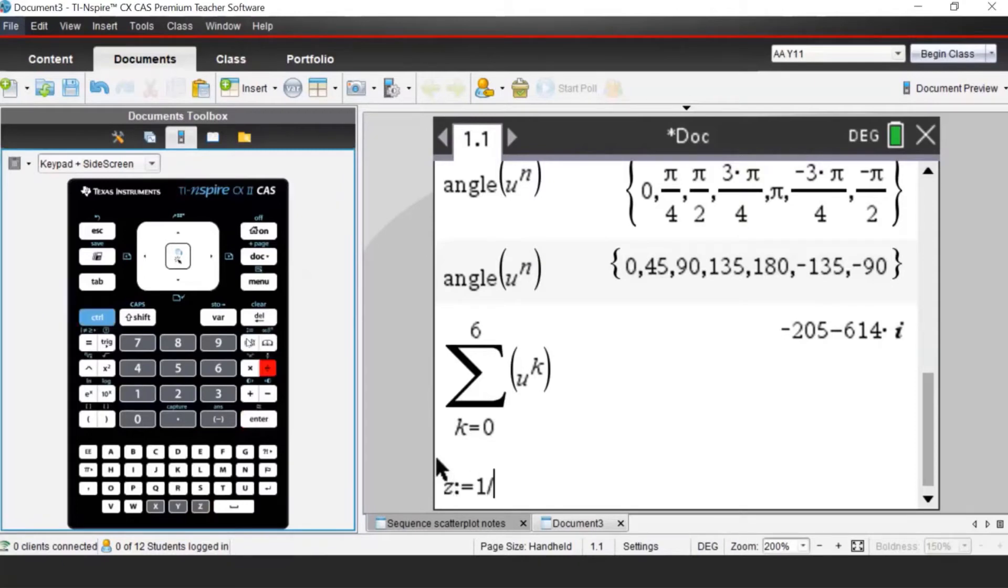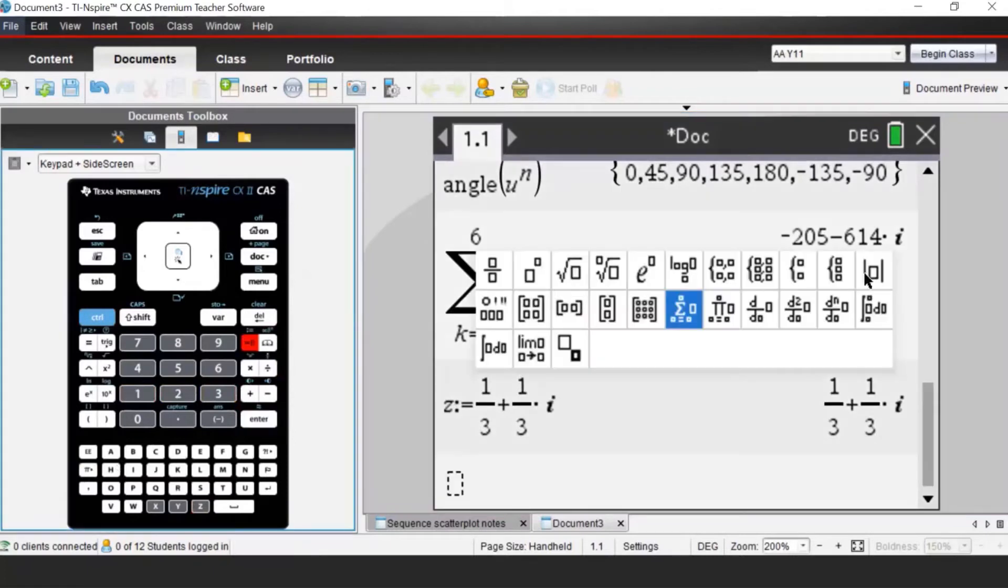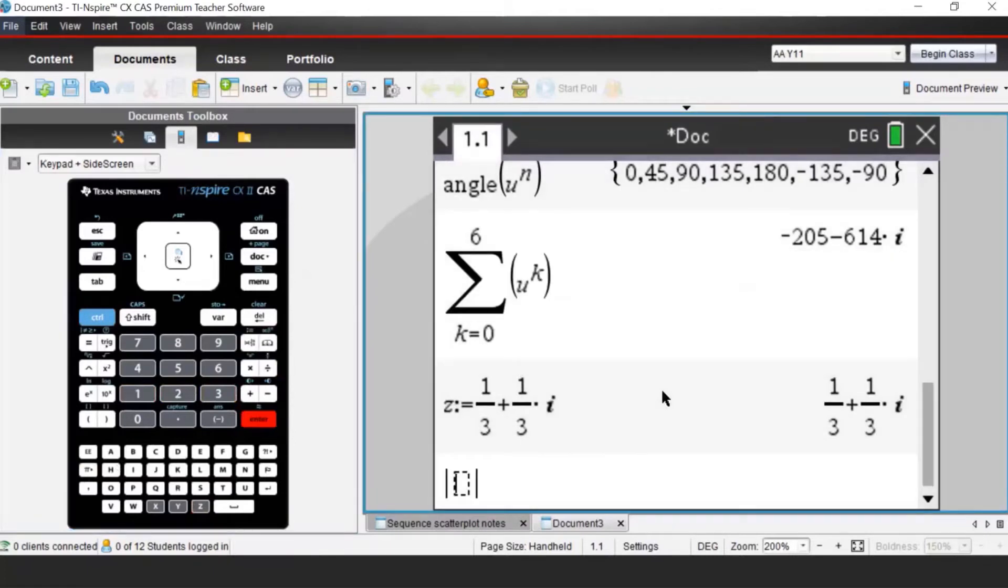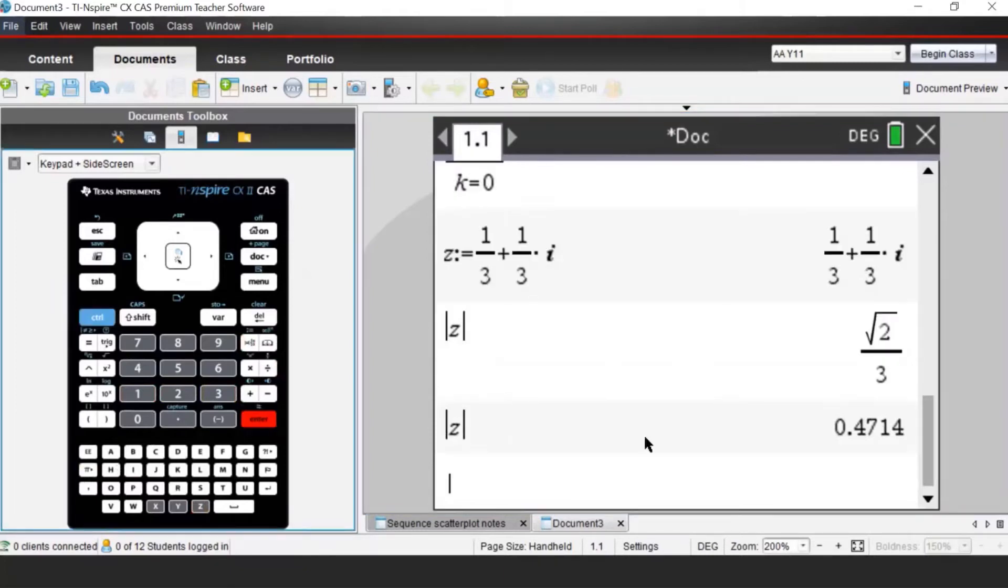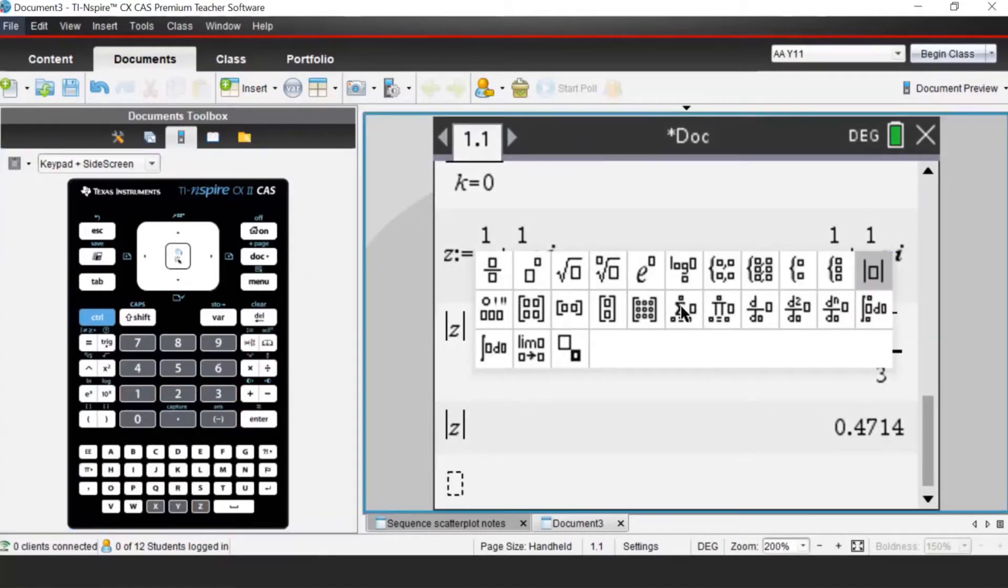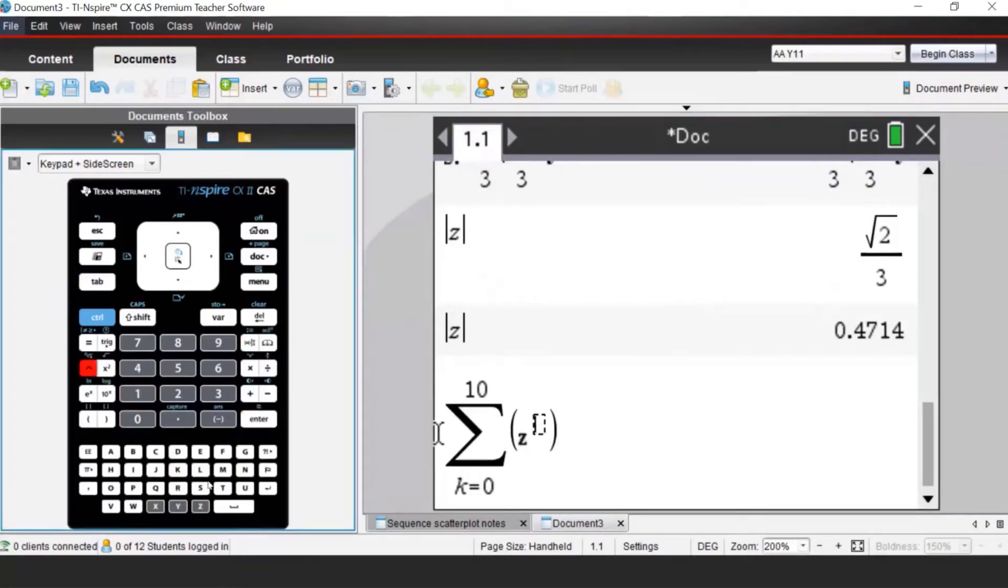So let's try a different complex number z. Let's say I will go one-third plus one-third i, the complex number which will have a different modulus. Let's compare what modulus of z is, and we can see that the modulus is this time a fraction.